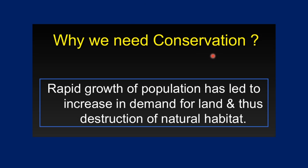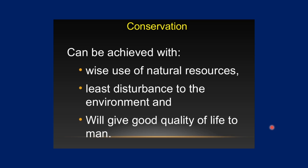So why do we need conservation? Conservation is needed because rapid population growth has led to increased demand for land and water, causing destruction of natural habitat. As population explodes, we need more land and raw materials, destroying our natural habitat in the process. The solution is conservation, which can be achieved through the wise use of natural resources. A simple example: if you see a tap left running, just turn it off — water continuously pouring out for an hour wastes enormous amounts.